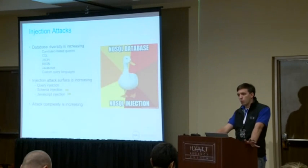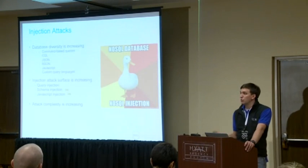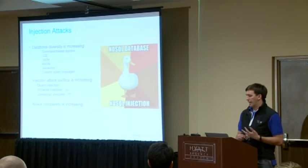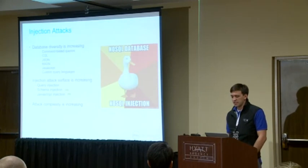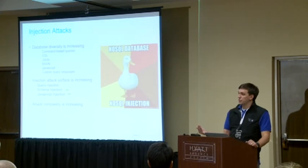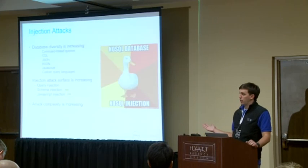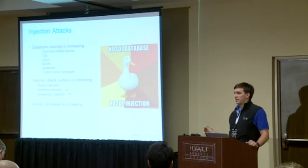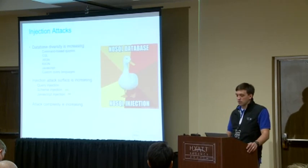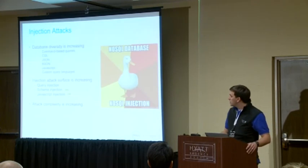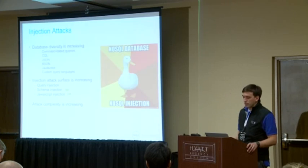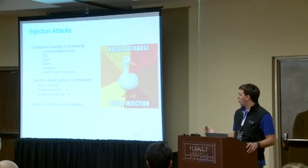The first topic is injection. Injection attacks are number one on the OWASP Top Ten. What makes NoSQL unique is that the types of databases we're working with are increasing in their diversity — we don't have one query language anymore. One architecture could be using JSON to query the database, another might be using CQL, and a lot of databases let you use JavaScript. This means attackers have to figure out what language you're using first, and when you're securing that architecture, you need to be aware of how each language can be exploited. Our injection attack surface is increasing too — instead of just SQL injection, we can now inject schema into document databases and JavaScript, which is really fun. The complexity of attacks against a NoSQL architecture is much greater than with a traditional SQL database.